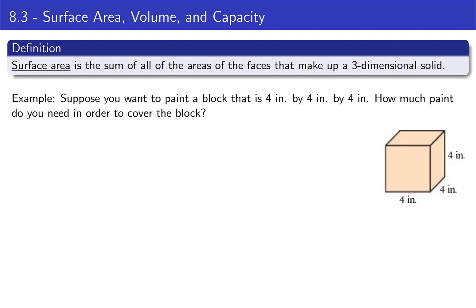Let's start with a basic example. Suppose you want to paint this block, shown below. It's four inches by four inches by four inches, and we want to figure out how much paint we need in order to cover the block. Within reason, paint is pretty thin, so it's the same as surface area.